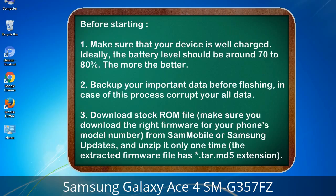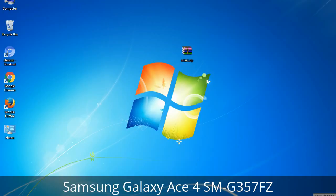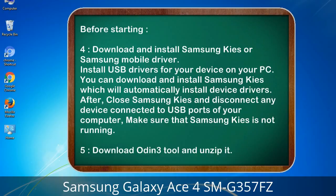Before starting: 1. Make sure that your device is well charged. Ideally, the battery level should be around 70 to 80 percent — the more the better. 2. Back up your important data before flashing, in case this process corrupts your data. 3. Download the stock ROM file. Make sure you download the right firmware for your phone's model number from Sammobile or Samsung Updates, and unzip it only one time. The extracted firmware file has a .tar.md5 extension.